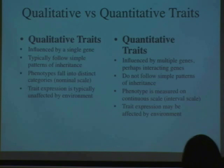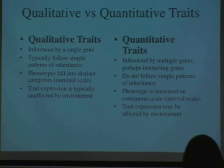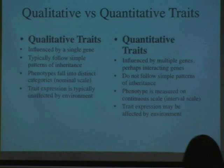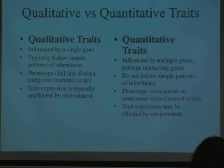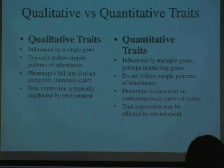What we're looking at here with QTL analysis is quantitative traits, which are most of the traits in the world. These tend to be influenced by multiple genes, perhaps interacting. They don't follow simple patterns of inheritance. Phenotypes are measured on a continuous interval scale — and I say interval scale, that makes sense to you all since you've taken statistics — things that have equal intervals across the different numbers. And the trait expression may be affected by the environment. Most traits in terms of human traits or even mouse traits are quantitative rather than qualitative.